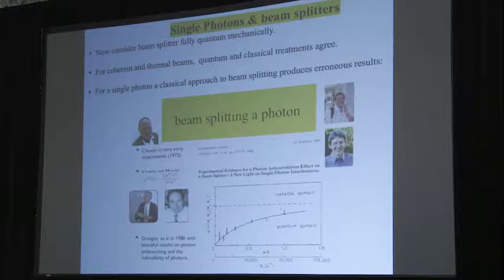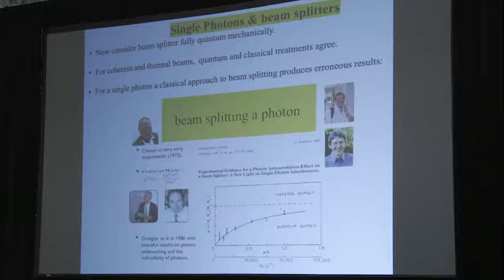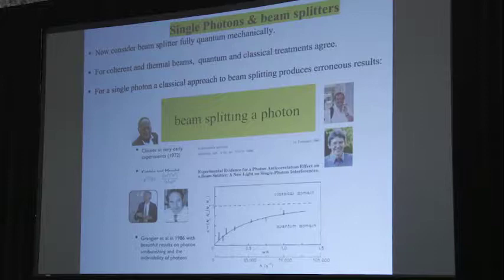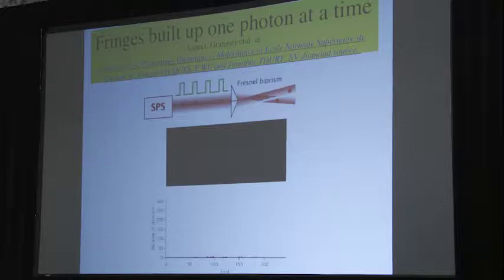The first person to actually do that was John Clauser in extremely early experiments in 1972. He actually did see what we would now call antibunching. He never used that word. Then Jeff Kimble, Len Mandel, Philip Grangier, lots of others, Alain Aspect. And what they showed is that it's impossible to beam split a photon. If you have a stream of single photons coming towards a beam splitter, it probabilistically goes through or is reflected, but never both. You can't beam split. So this is this indivisibility of a quantum particle.